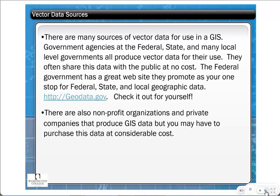There are many sources for vector data, including federal government sites and state sites. In Maryland, for example, DNR and the State Highway Administration (SHA) both have download sites. Many local governments produce vector data, though some share it and some don't — you have to contact them to find out. We have a section in the workshop to help you find data, because for the final project you'll need to find your own data and make a map.